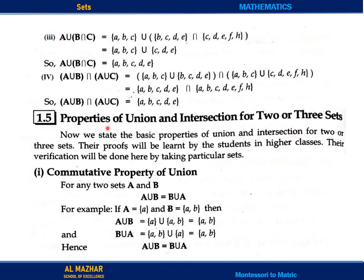These are the properties of union and intersection for two or three sets. Now we have to know the properties. First of all, we have to see the commutative property. Commutative property is: A union B is equal to B union A — they should be equal.